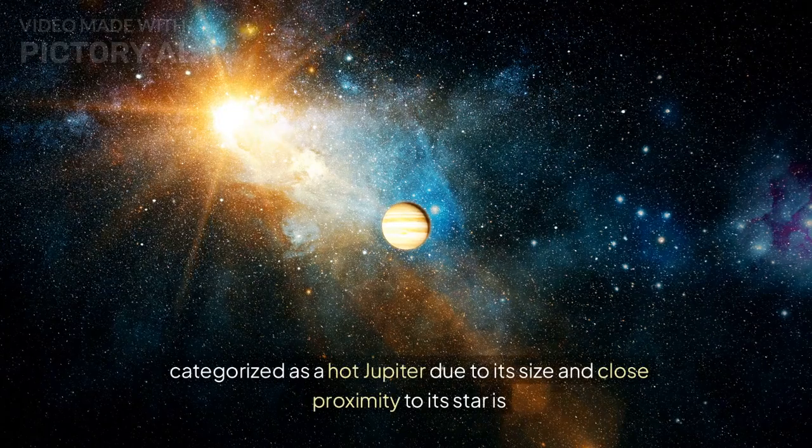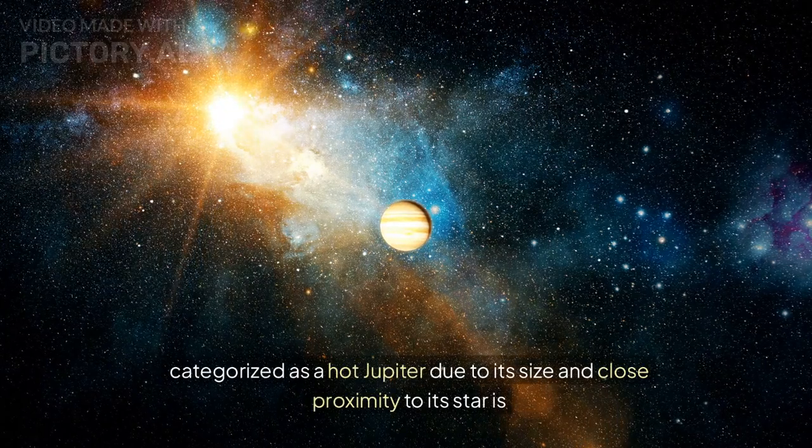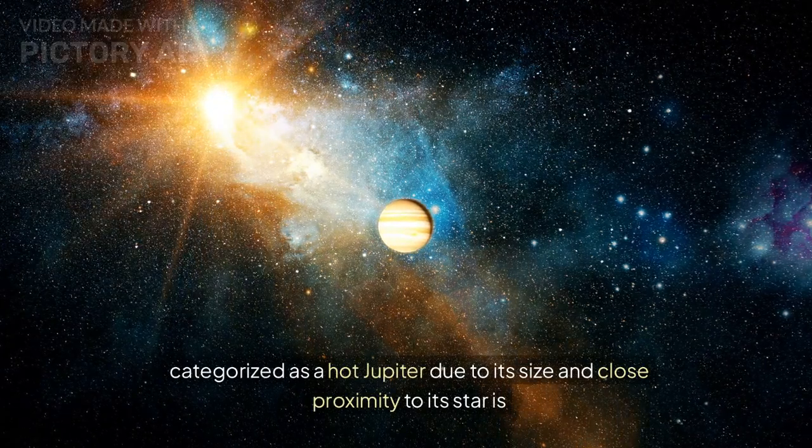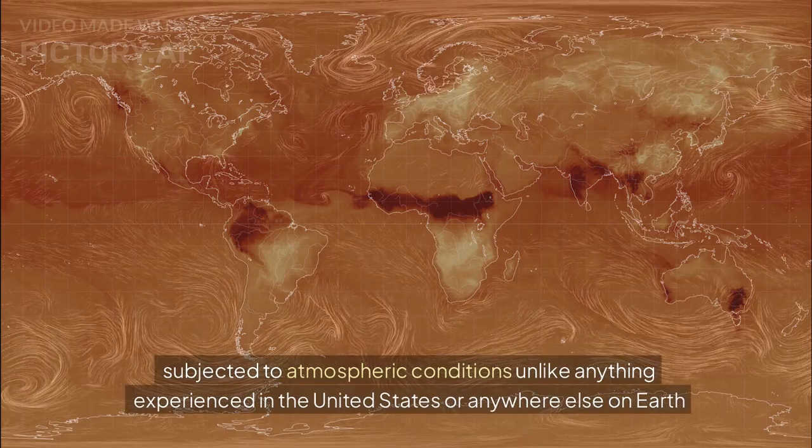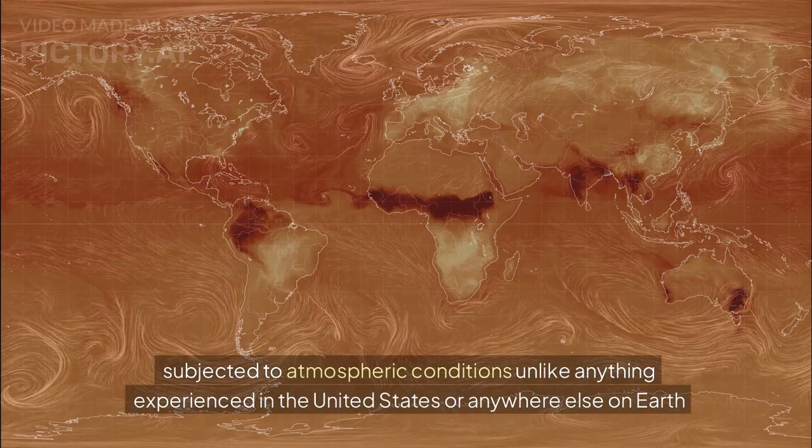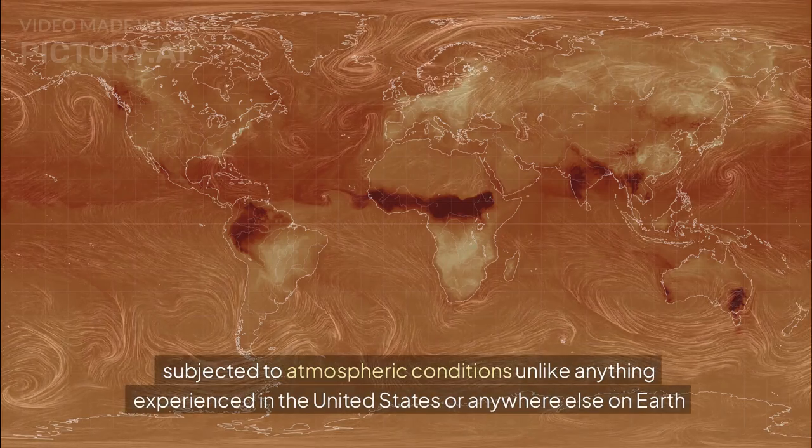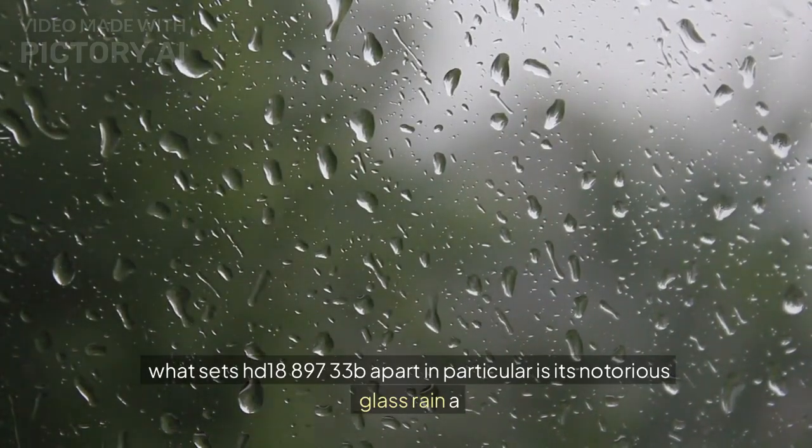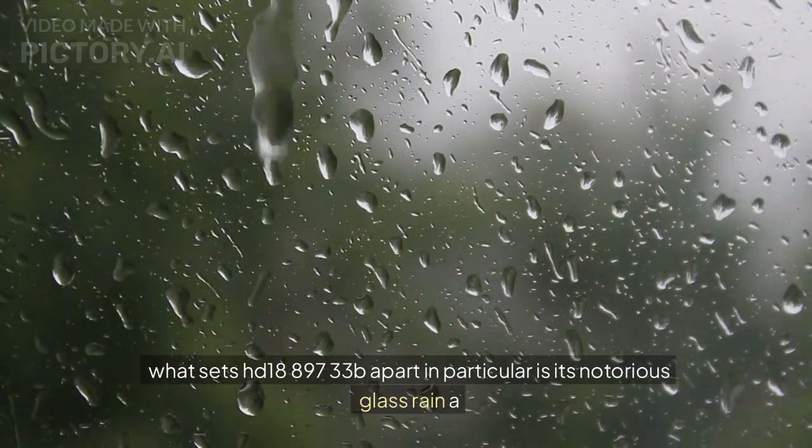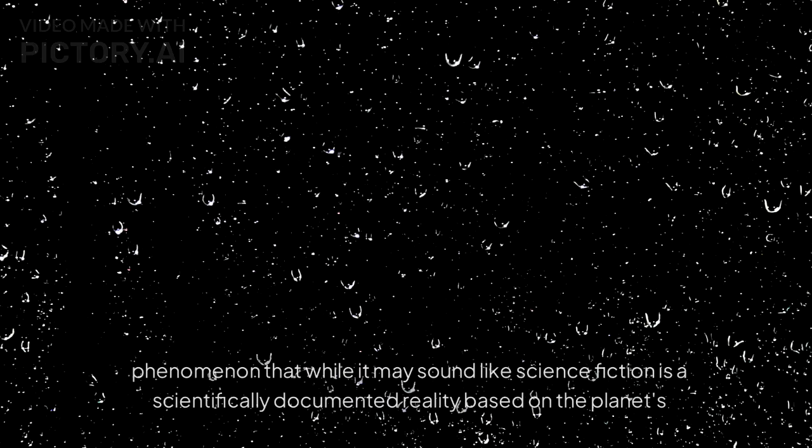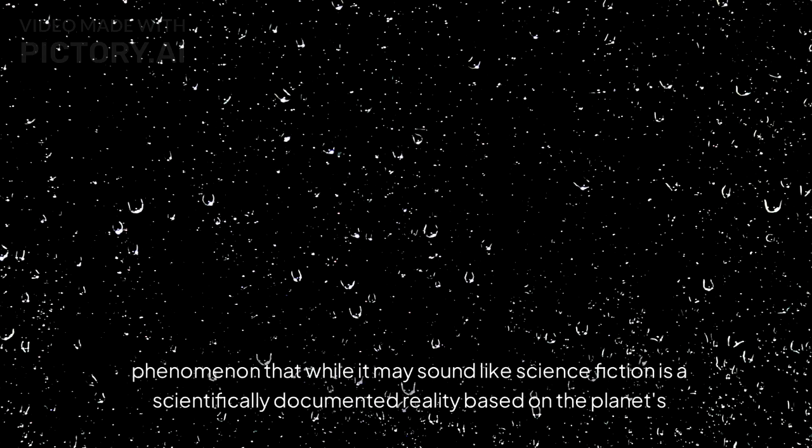This distant world, categorized as a hot Jupiter due to its size and close proximity to its star, is subjected to atmospheric conditions unlike anything experienced in the United States or anywhere else on Earth. What sets HD 189733b apart in particular is its notorious glass rain.